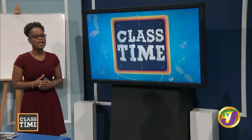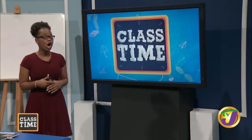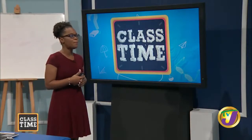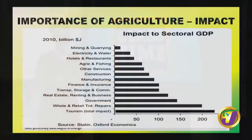Looking at the sectoral GDP — the contribution of agriculture compared to other economic sectors such as mining and quarrying, electricity and water, and hotels and restaurants — agriculture is probably fourth in terms of contributing the least to Jamaica's GDP.